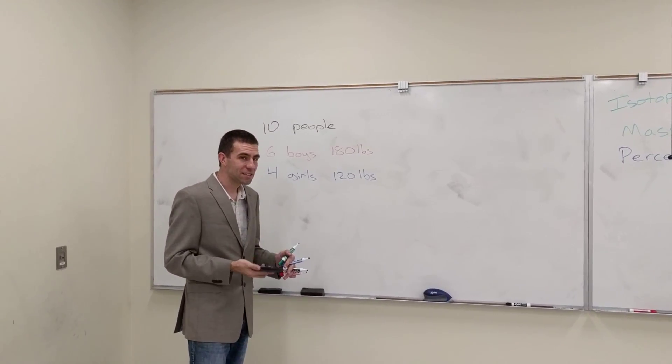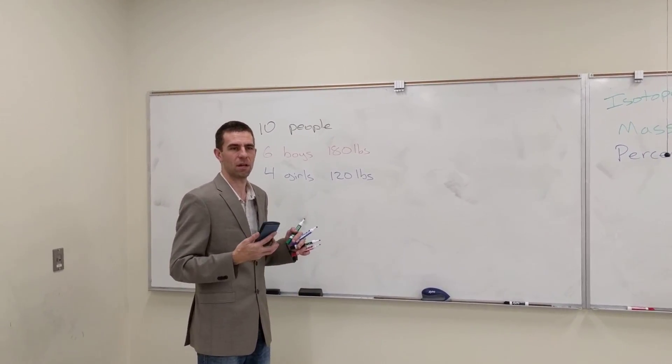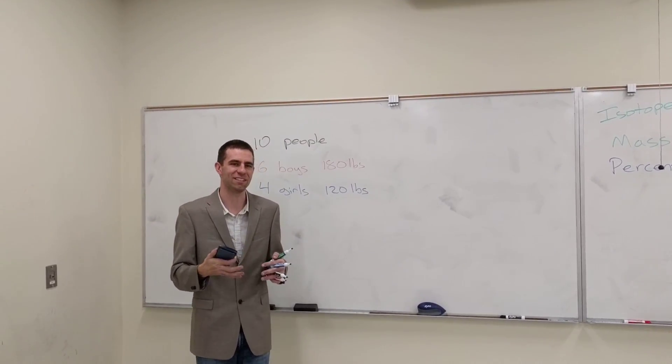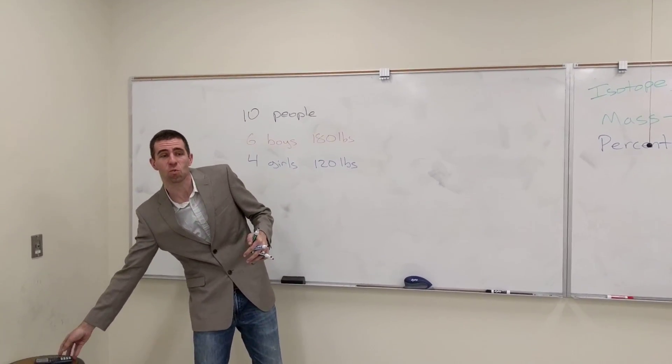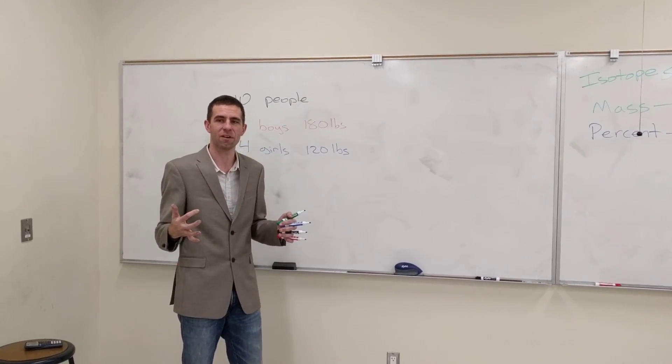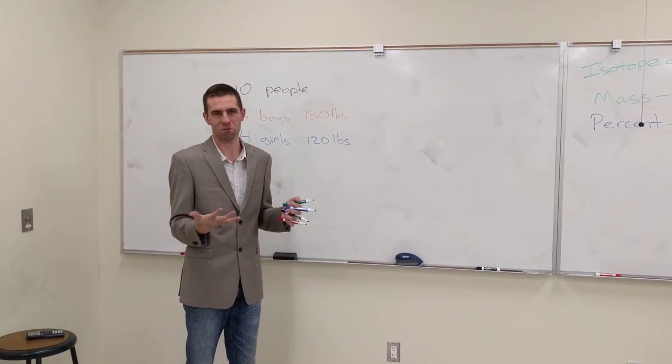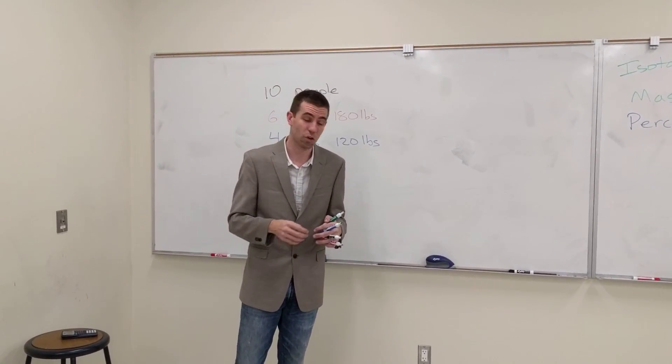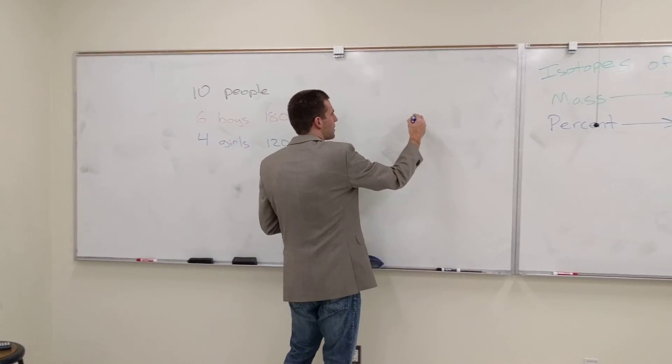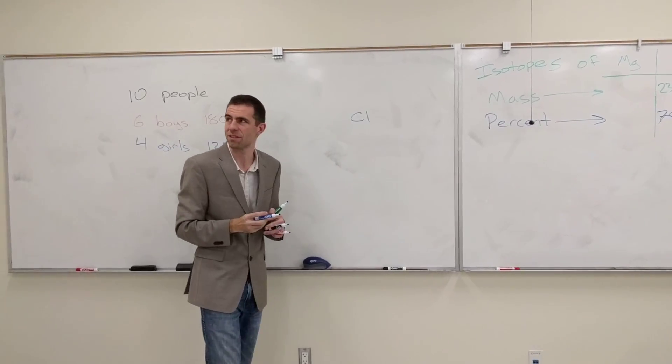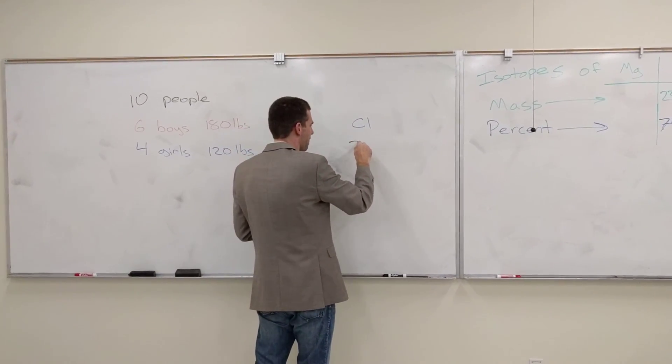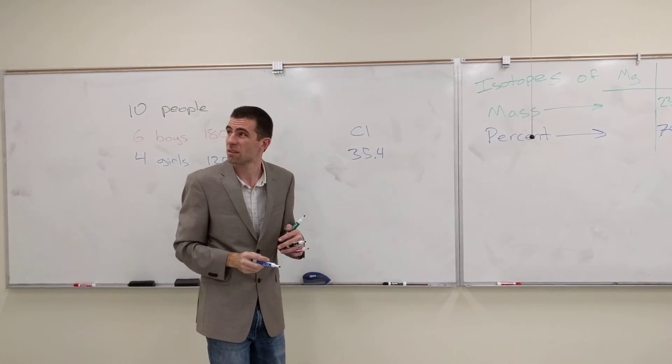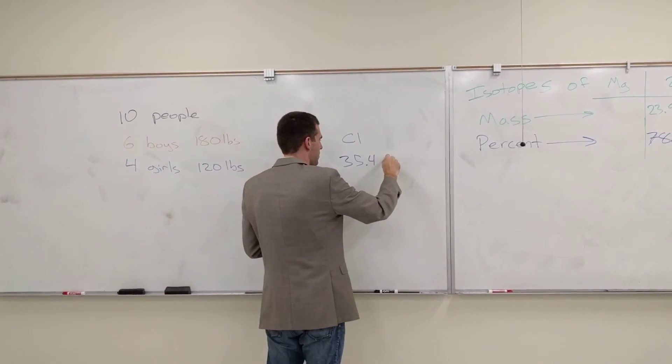So we're going to learn about isotopes, how to calculate isotopes. When you have isotopes, you have a bunch of different weights of atoms. And when you put those weights, the different weights of atoms together, you actually get a really strange weight. So if you look at the periodic table, for example, chlorine has a mass of 35.4527.